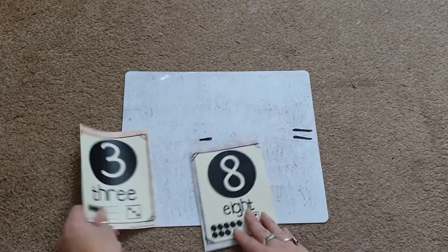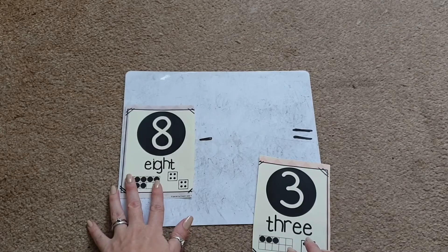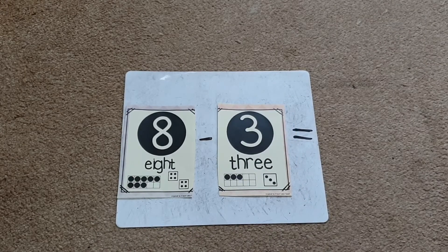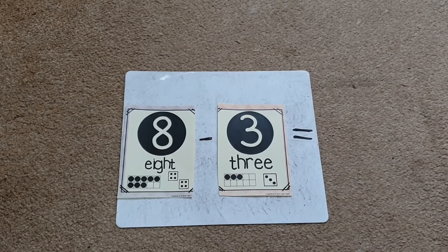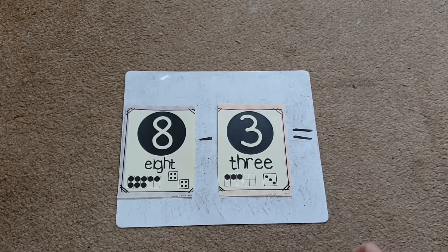And then obviously, hopefully they'll come to the conclusion that they have to put the biggest number first. So then it becomes 8 take away 3. So that's a really good way to kind of talk about what order the numbers go in to make sure that our calculation works out right.